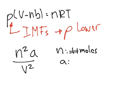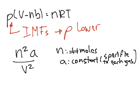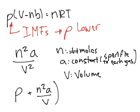The a is a constant, like b. And it's specific to each gas too. And the V is just the volume. So we said we will add it, so P plus n²a over V². That is our new pressure value.